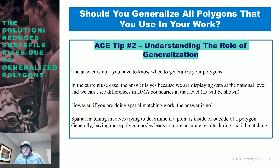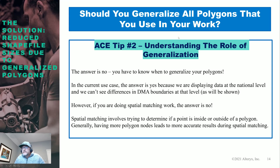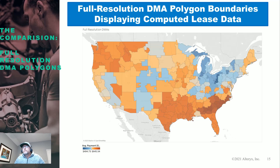But if you're doing spatial matching where you're using polygons and points — whether a point is inside or outside a polygon — that's not going to be as accurate. For example, if I'm tracking an automobile through different time zones and I have time zone polygons, I wouldn't want to generalize those because I'm not going to get accuracy as I cross over that boundary. That's why generalization is not applicable to every case, but when you need it, you need it.